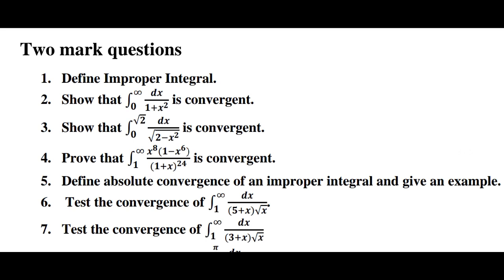Fourth question: Prove that integration from 1 to 8, x raise to 8 times the bracket 1 minus x raise to 6, divided by 1 plus x bracket complete, raise to 24 is convergent. Fifth question: Define absolute convergence of an improper integral and give an example.